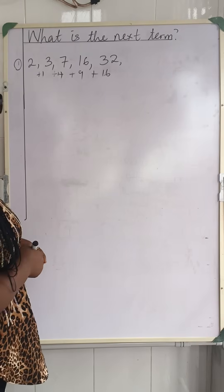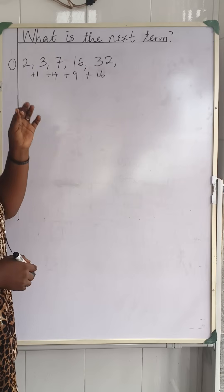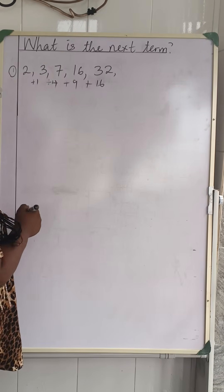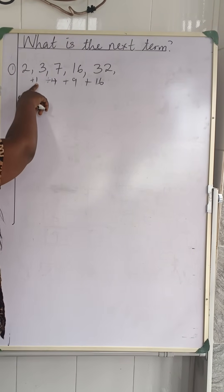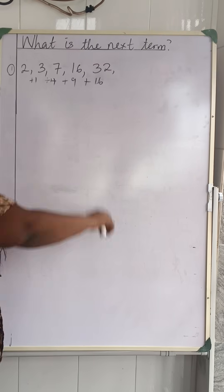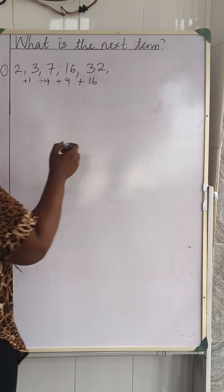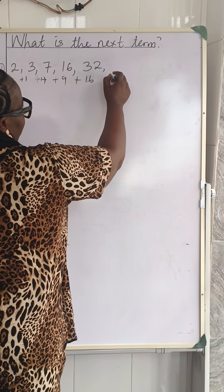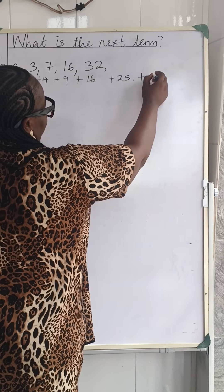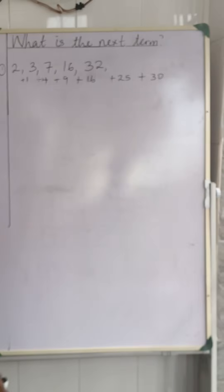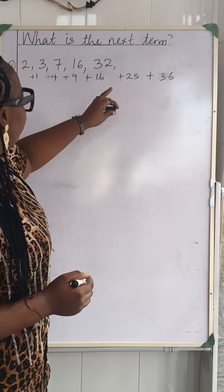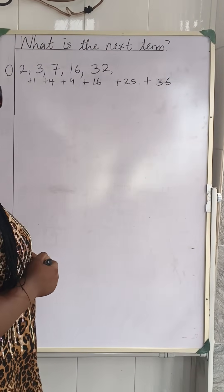So what do you think the next term or the next two terms are going to be? Here the differences are plus 1, plus 4, plus 9, plus 16 — that is 1×1, 2×2, 3×3, 4×4. So automatically the next difference is going to be 5×5, which is plus 25. And if we have another term after that, it would be 6×6, which is plus 36.